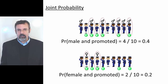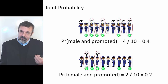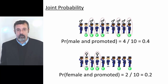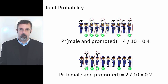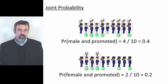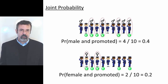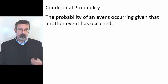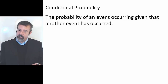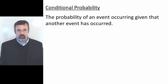A joint probability tells us the likelihood of a given officer being both female and promoted. To understand the difference between the probability of a male being promoted and a female being promoted, we need a new probability measure. We call this a conditional probability. A conditional probability is the probability of an event occurring given that some other event has occurred.